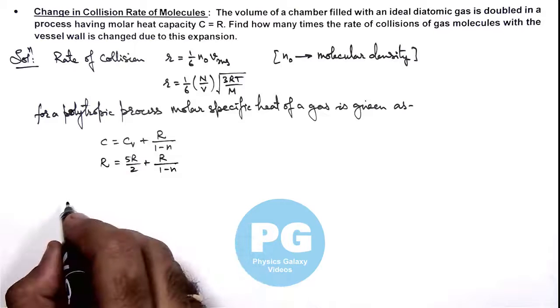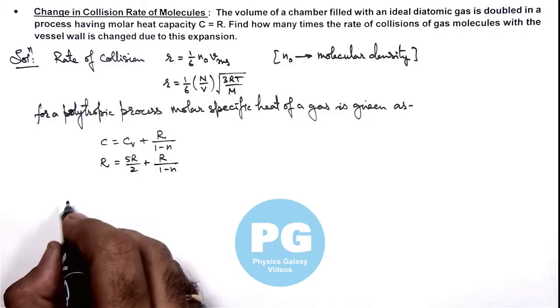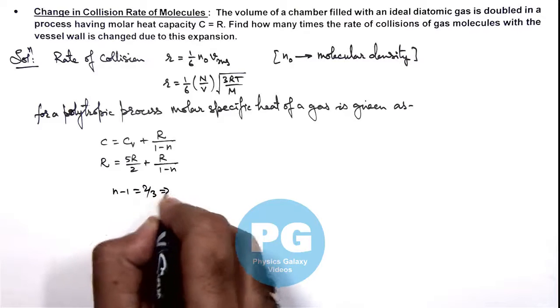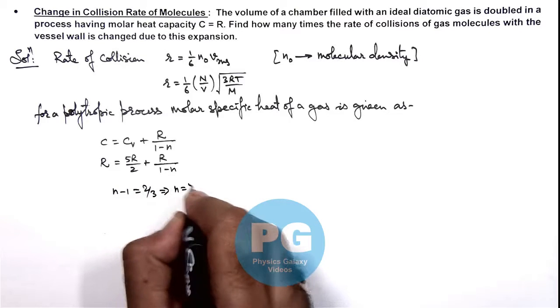So we simplify these values here we can see n minus 1 by 3. We are getting n minus 1 is equal to 2 by 3, or the value of n we are getting is 5 by 3.